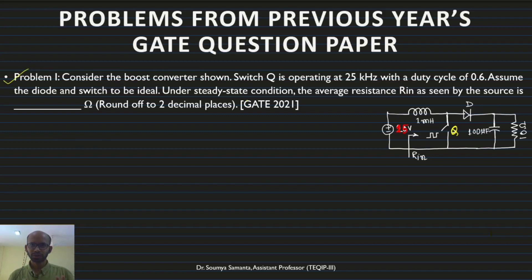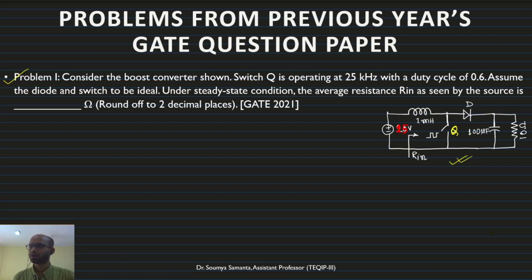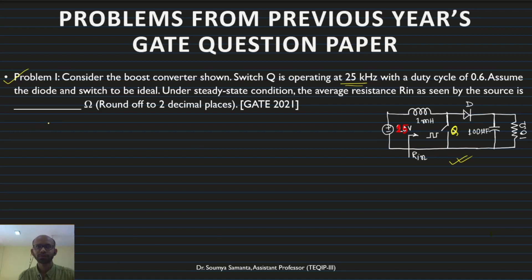The first step is to read the problem very carefully, find out what data is given, and then determine what we need to find. In this example: consider a boost converter. The switching frequency FSW is 25 kilohertz, and the duty cycle D equals 0.6. Since the switch is ideal, input power equals output power.